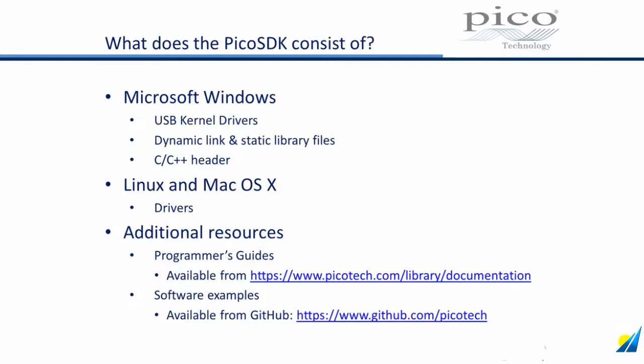So what does the Pico SDK consist of? On Microsoft Windows platforms, we provide an installer package that consists of USB kernel drivers, dynamic link and static library files, as well as C and C++ header files. These installer packages are available in 32-bit and 64-bit versions.